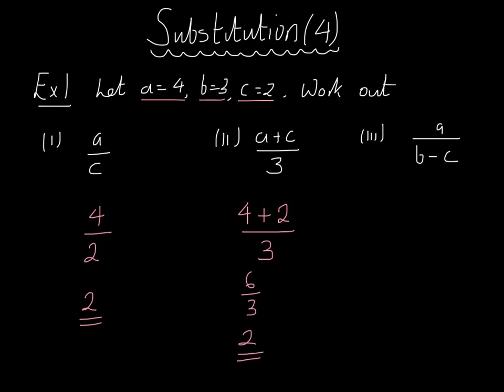A divided by B subtract C. A is equal to 4, divided by B subtract C, which is 3 subtract 2. So that's 4 divided by 3 subtract 2 which is 1, and 4 divided by 1 is clearly 4. So there are our first few examples. Copy these down and when you're doing your examples make sure you're showing your working like I have.